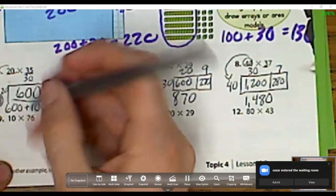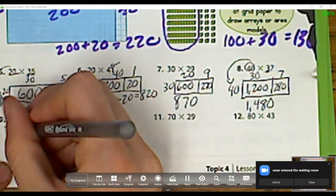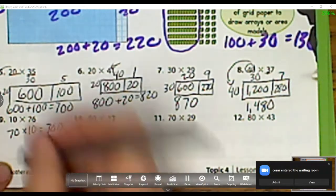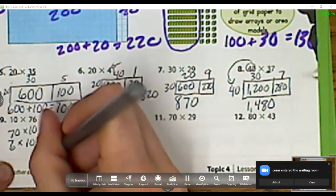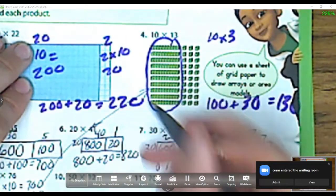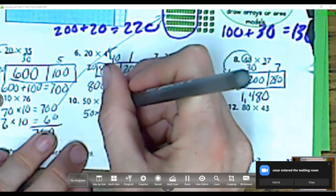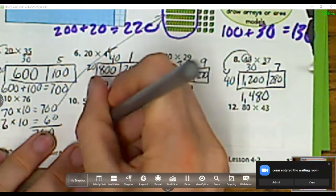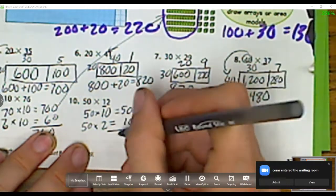I'm not going to draw my models for this next one. I'm just going to break it up into my two place values of 70 times 10, which is 700, and then 6 times 10, which is 60. So I get 760. And this part right here is similar to this kind of model that I'm doing up here. Now I have 50 times my first place value is 10, which is 500, and then I have 50 times 2, which is 100. So when I add those together, I get 600.